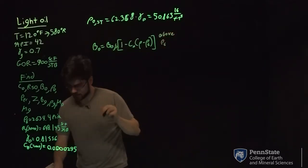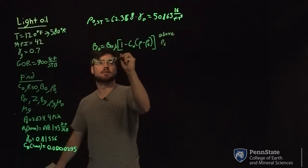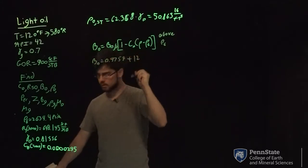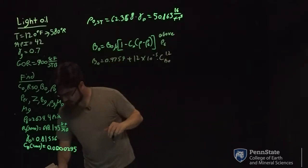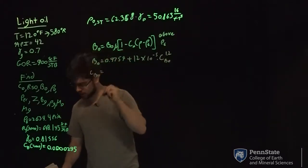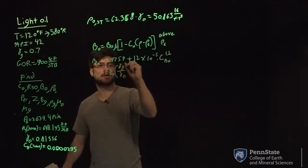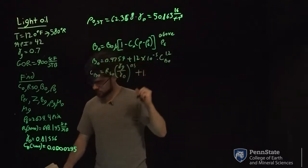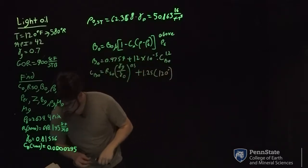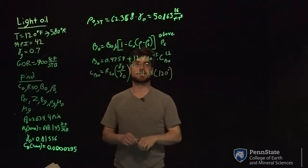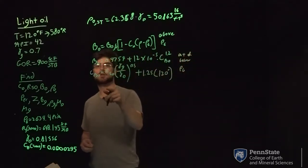For below PB, BO equals 0.9759 plus 12 times 10 to the negative fifth, times CBO to the 1.2 power. To find CBO, CBO equals RSO at your pressure of interest times (gamma G over gamma O) to the 0.5 power, plus 1.25 times your temperature, which in this case is 120 degrees Fahrenheit. Our RSO at bubble point is 900.